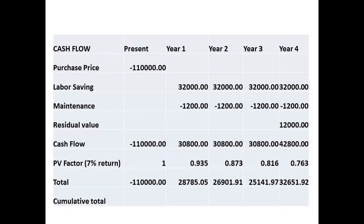In the fourth year, the cash flow is increased since the machine will be sold with a salvage value of $12,000. The present day value of cash flow for the fourth year is then $32,651.92. This gives us a cumulative value of $3,480.85. Since this figure is greater than zero, then there would be a return on the investment at 7% over the four years of estimated life of the machinery.